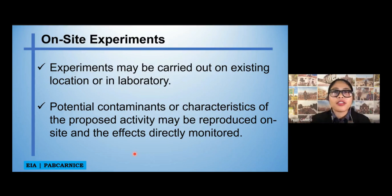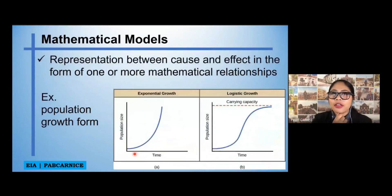Next approach is mathematical models. So representation between cause and effect in the form of one or more mathematical relationships. The two simplest model examples would be the population growth form in which you can put a mathematical model on this. For example, your proposal is to build a condominium building in Tacloban City. So, of course, you have to predict as to what will be the population of Tacloban City after five to ten years.